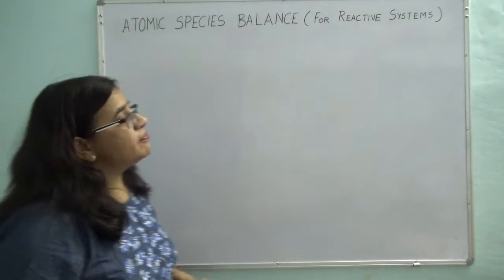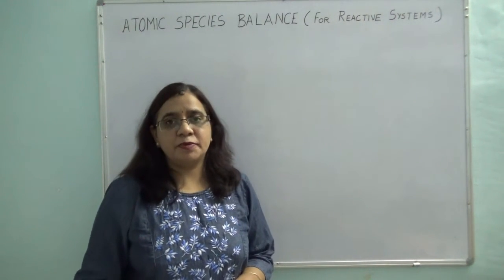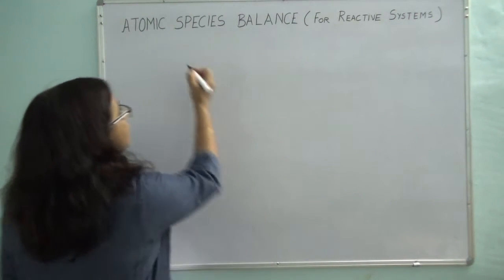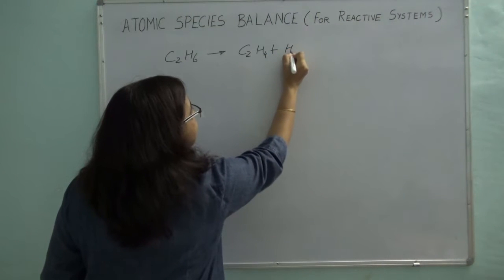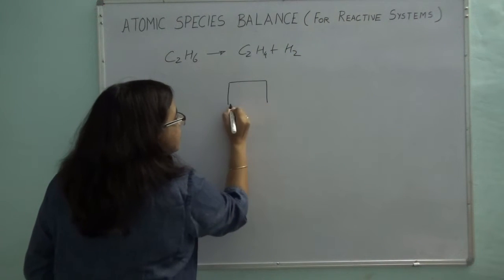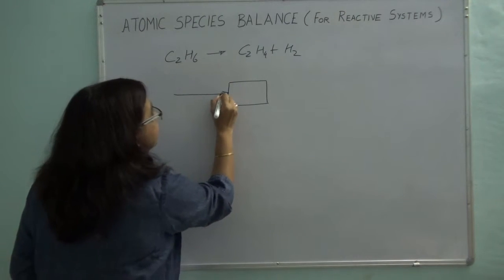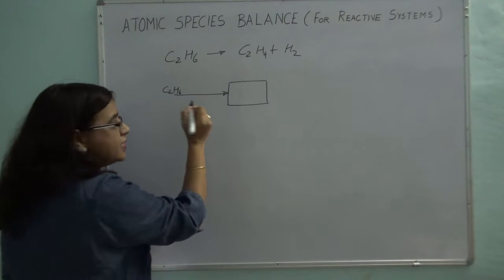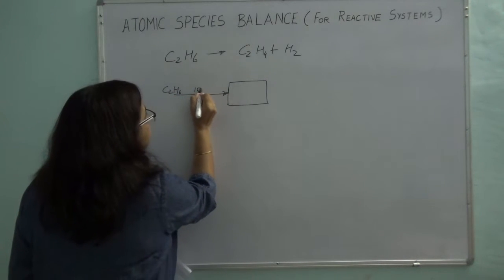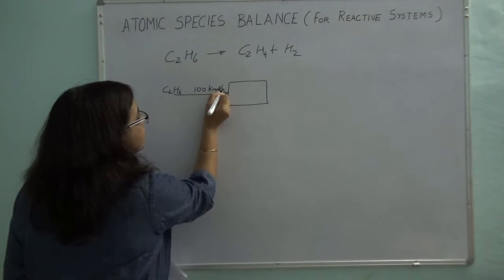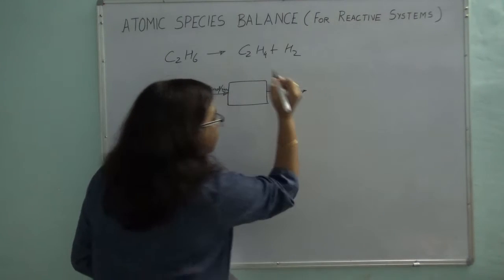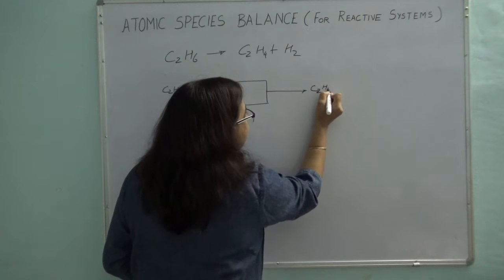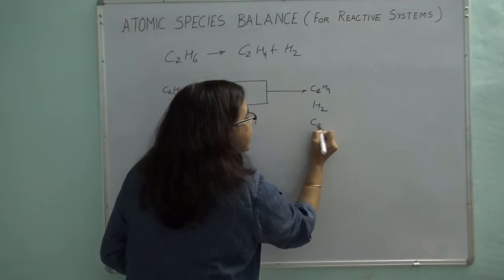Let me give you an example and through that explain what atomic species balance is. We have already seen this reaction being carried out in a continuous reactor where I have a feed of pure C2H6 going in at a rate of 100 kilomoles per minute. The product stream coming out consists of C2H4, hydrogen, and some unreacted C2H6.